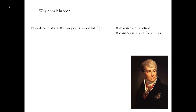So why does imperialism happen? First, the Napoleonic Wars proved Europeans shouldn't fight each other. When European countries fight each other, you get massive destruction — we see this in the American Civil War, where roughly 2% of Americans died, making it the bloodiest war the United States ever fought. The conquest of the West really starts after the Civil War, because white people couldn't fight each other anymore.